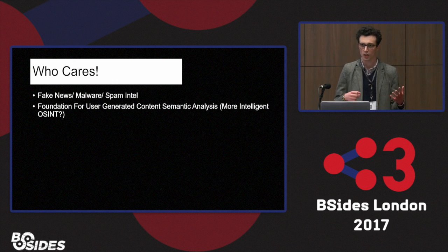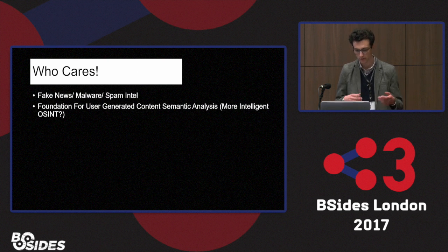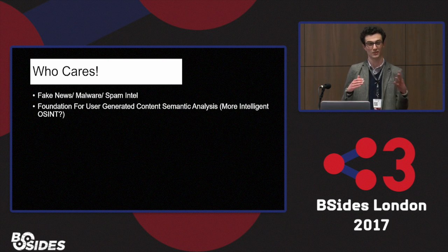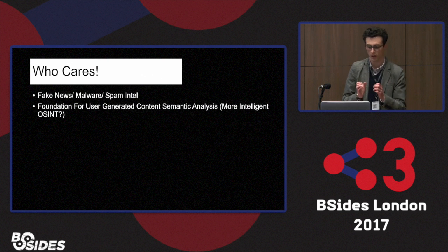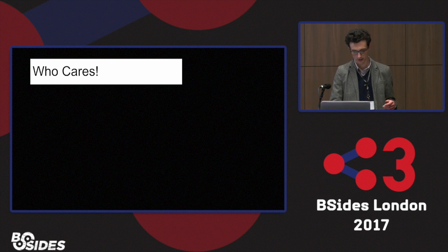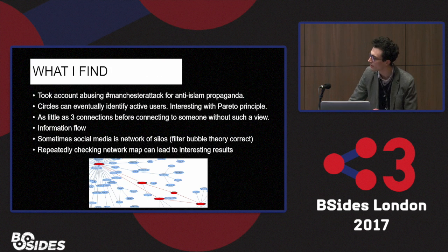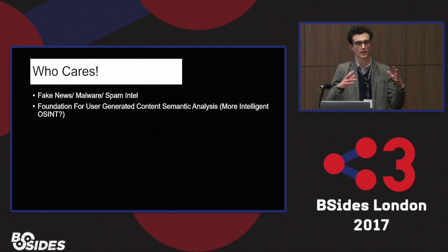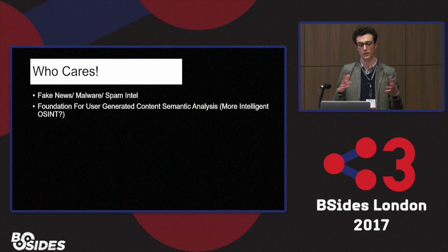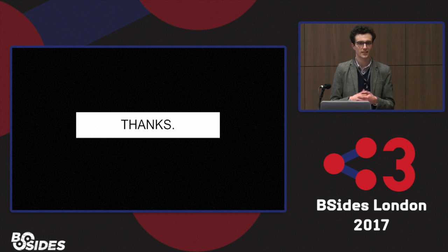Finally, I talked about intelligent open source intelligence. Basically what I'm saying is: once you've got a connection loop or a circle, concentrate on the people that are in there — these are shown in red — and look at their user-generated content, instead of blindly looking at everyone's content, which could be unreliable or where they're lying. So that's the foundation for a more targeted user-generated content semantic analysis.